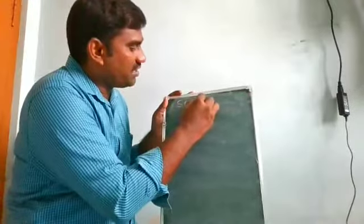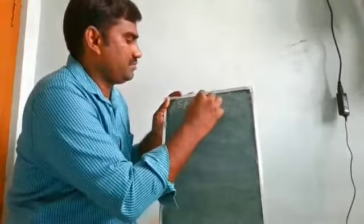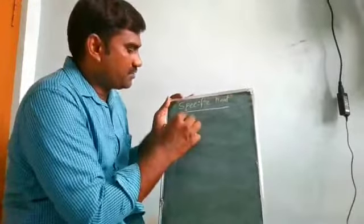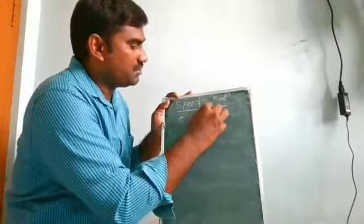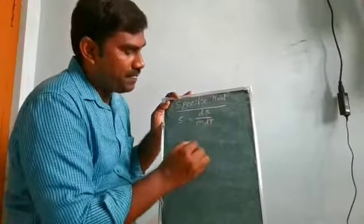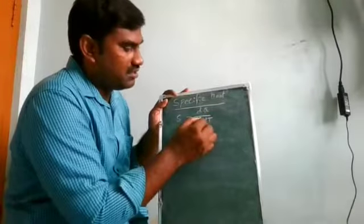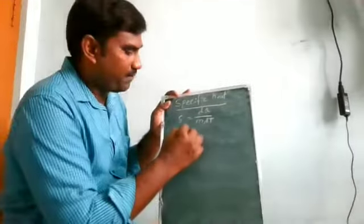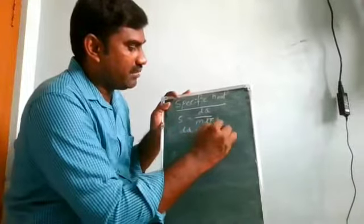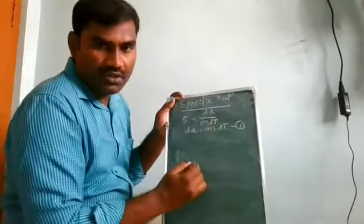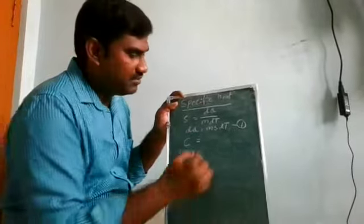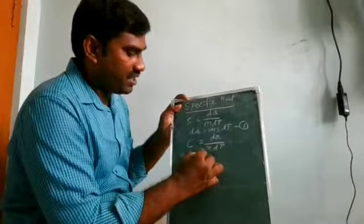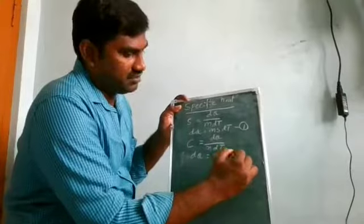Next, we discuss specific heat, represented by S. S equals dQ divided by m·dT — the amount of heat required to raise the temperature of unit mass of the gas by 1 degree centigrade. So dQ equals m·S·dT. Molar specific heat is represented by capital C, which equals dQ divided by n·dT, so dQ equals n·C·dT.